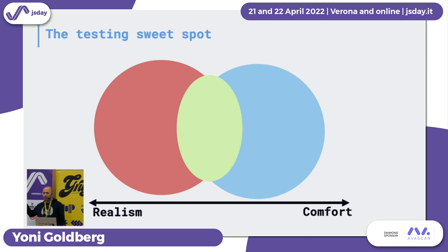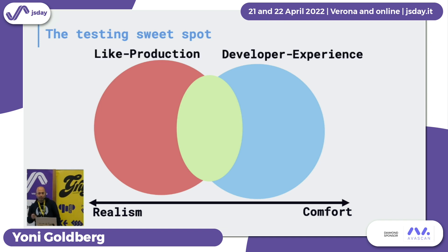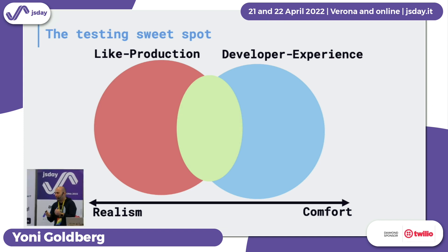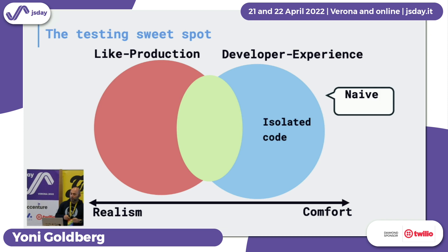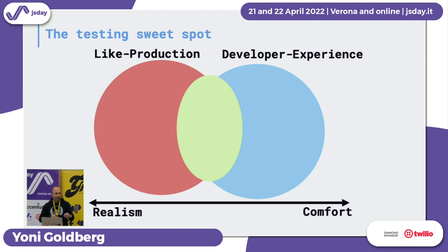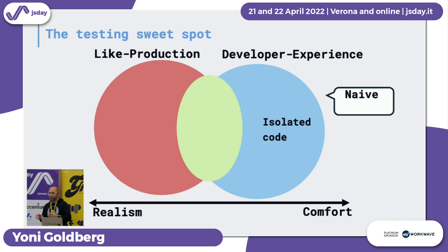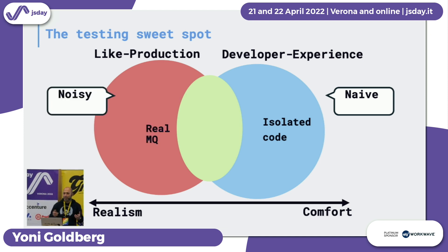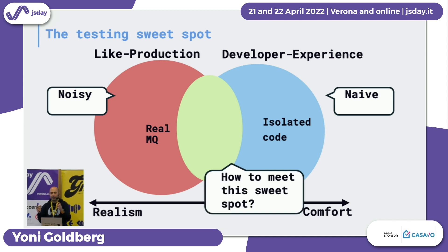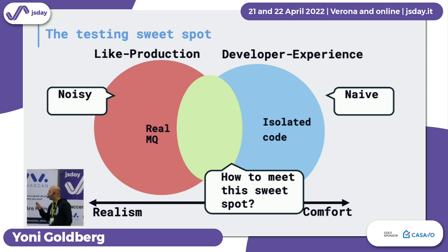I think we can frame most testing mistakes over this visual. On one side, the blue galaxy is our need to have great developer experience — comfort, speed, determinism. On the other side, we have the need to make things like production, realistic, catching bugs early. My first attempt to isolate the code was too naive, and the second approach of using a real message queue was too noisy. What I really need is something in the middle — a sweet spot. How can we achieve both great developer experience and something realistic? This is the subject of my talk.